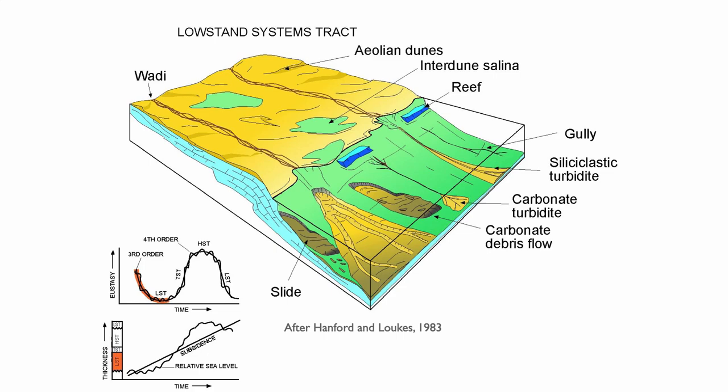Let's look theoretically first on this block diagram at what happens to carbonates when they are exposed during low stand but in arid conditions. That's a stark difference from what we saw previously. The main difference is that during low stand you typically have eolian dunes migrating on top of the exposed carbonates.